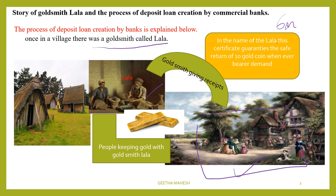People thought it was not safe to keep gold with themselves, so they decided to keep gold with Lala. When villagers started keeping gold with Lala, he started giving them paper receipts.